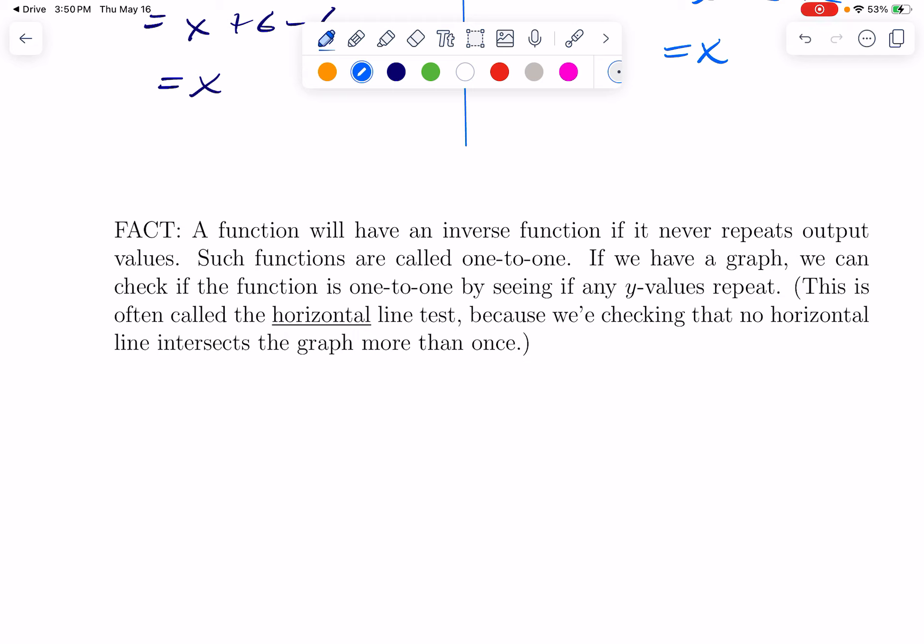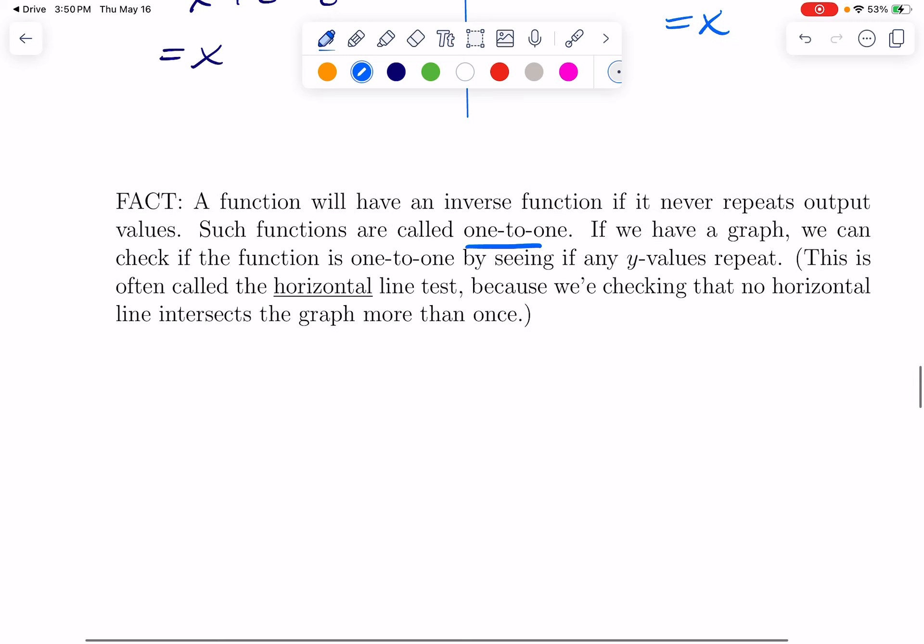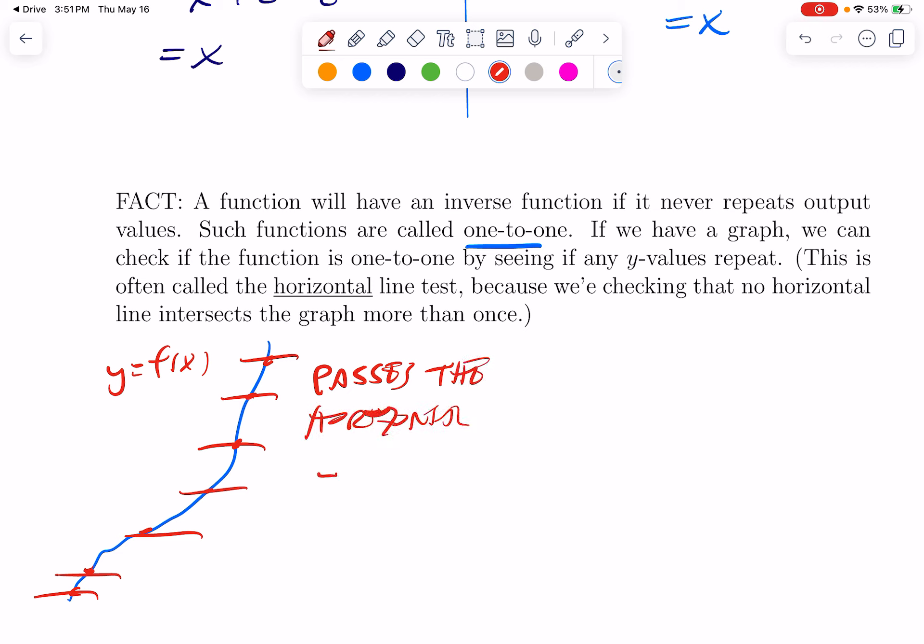A useful fact is that a function will have an inverse function if it never repeats output values. Such functions are called one-to-one. And we can tell something is one-to-one on a graph by what's called the horizontal line test. If every horizontal line hits the graph only once, or perhaps not at all, then we can take an inverse. So, this passes, right? This is the graph of y equals f of x. This passes the horizontal line test. And therefore, it has an inverse. An inverse function.